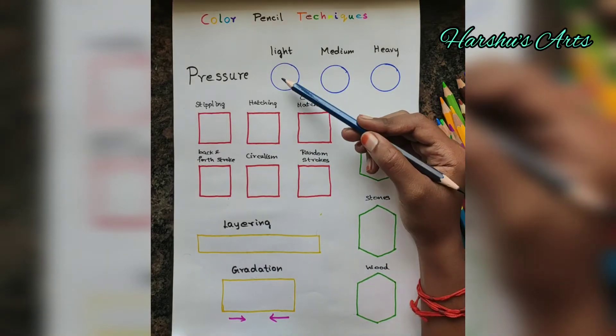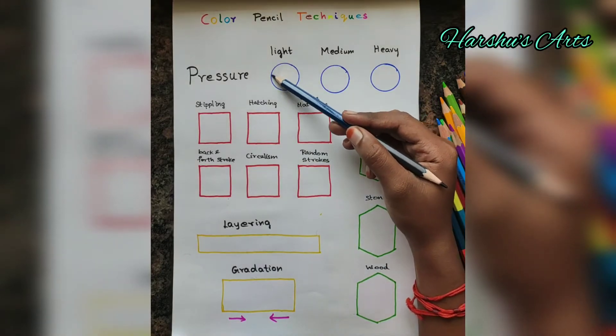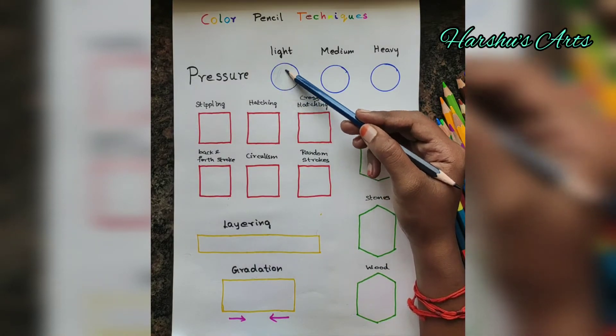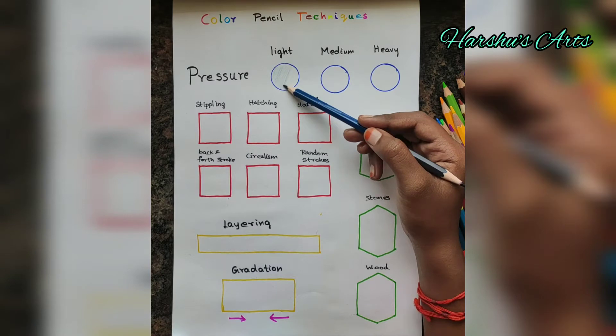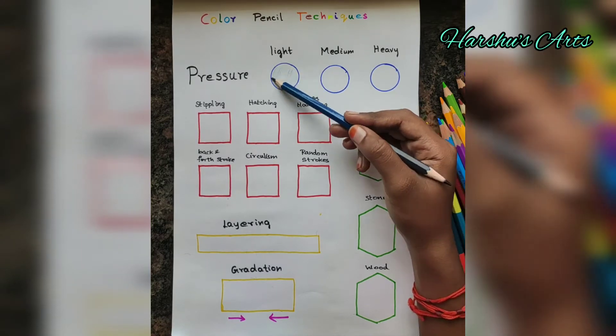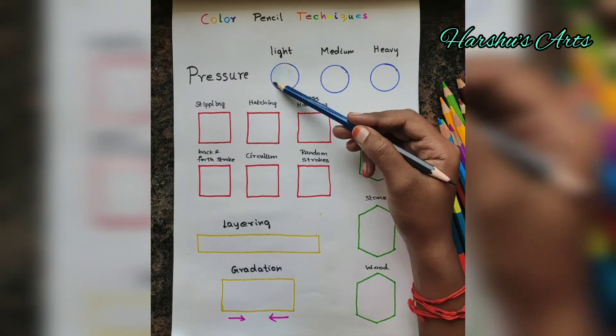First, Pressure. Pressure is light, medium, and heavy. These are the three types of pressure used in color pencil drawing: light, medium, and heavy.